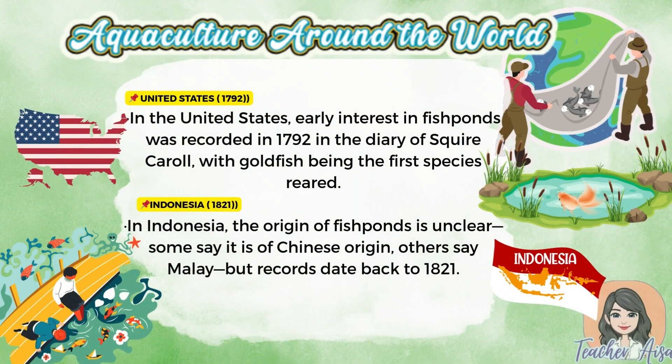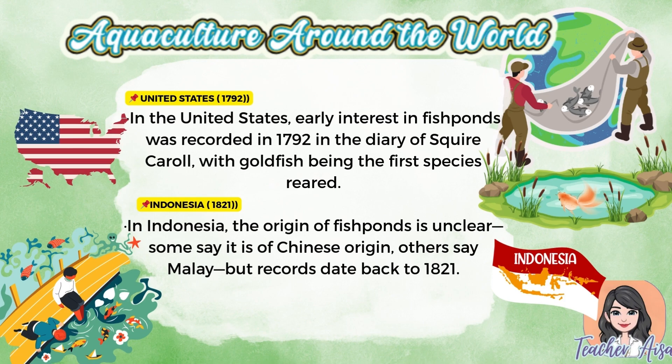In the United States, early records of fish ponds appear in 1792 through the diary of Squire Carroll; interestingly, the very first species reared was goldfish. Moving to Indonesia, the origin of fish ponds is debated — some say they came from China, others believe from Malay traditions — but written records date back as early as 1821.